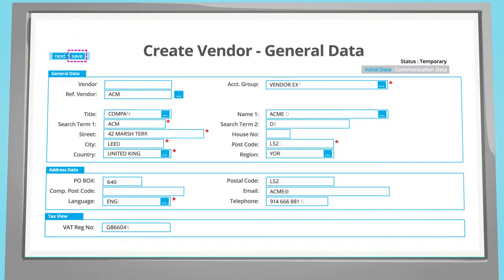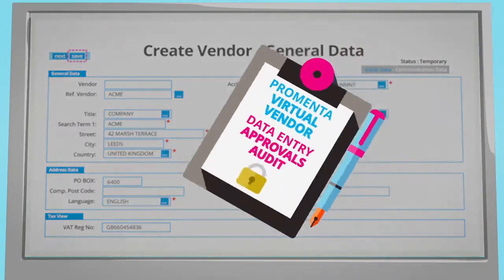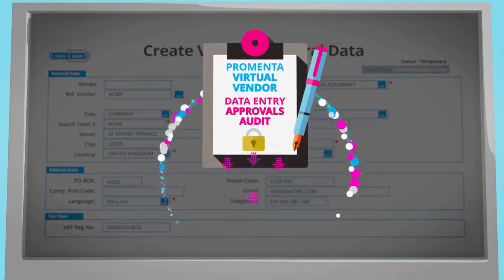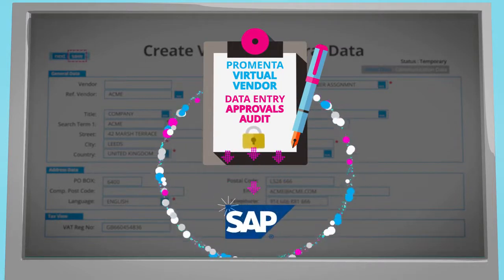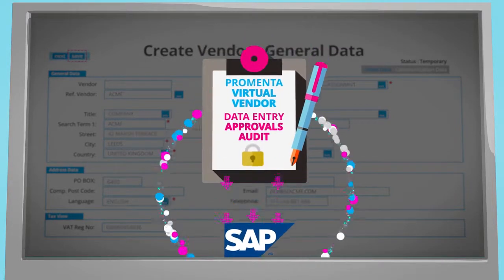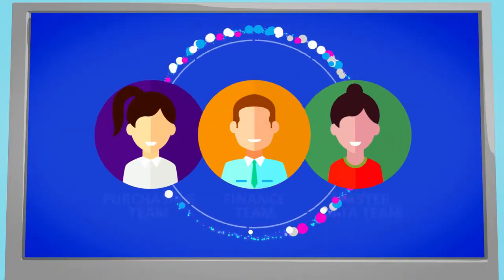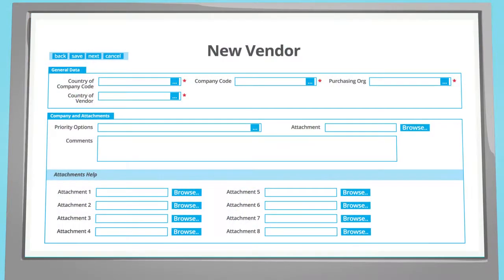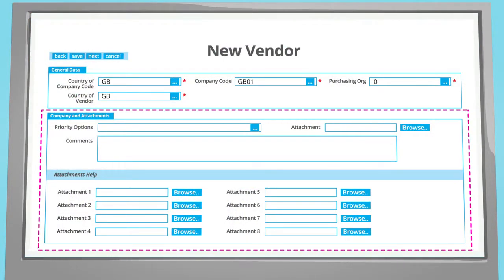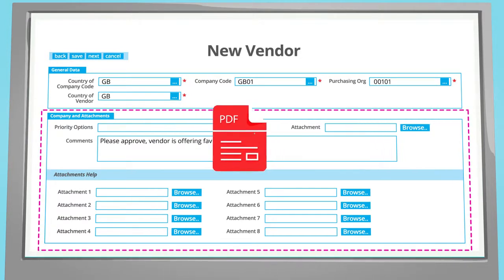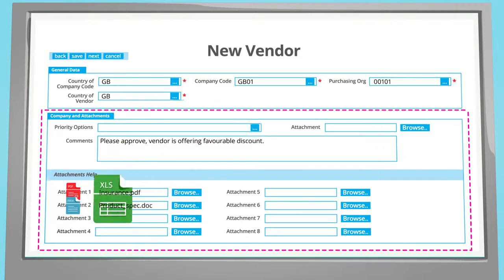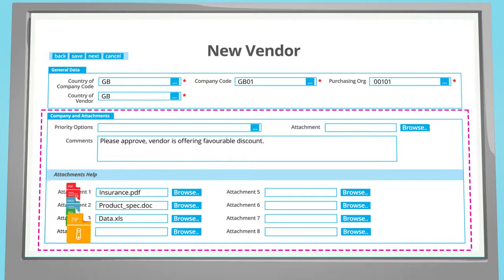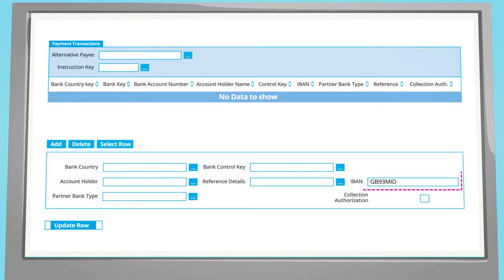ProMenta vendor Webflow holds a virtual vendor record securely inside SAP as part of the active request. The SAP vendor database is only updated when all the approvals are in place. Multiple teams can be involved in data entry, ensuring segregation of duties. External documents can be uploaded and attached to the request to support the approval process, and documents are stored against the SAP vendor record on final approval.